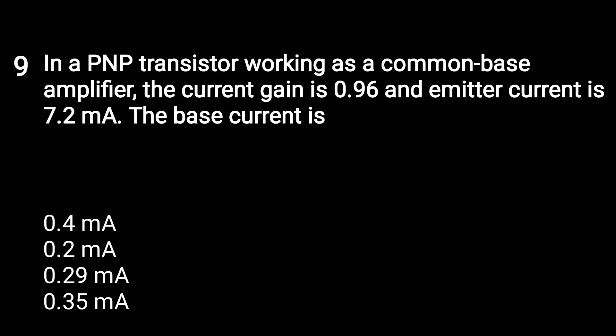Next question: in a PNP transistor working as a common base amplifier, the current gain is 0.96 and the emitter current is 7.2 mA. What is the base current? The base current is 0.29 mA. The formula and calculation are available in the theory lecture.